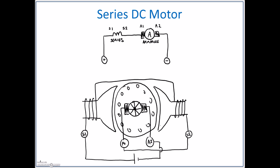And that's it. We're going to have current flowing from the DC source through the series winding, the exact same current through the armature and back to the source.